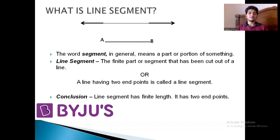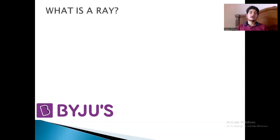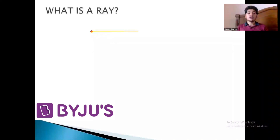Moving ahead, let us understand what is a ray in geometry. You must have heard about the word 'ray' in light rays or sun rays — have that understanding in mind and we will connect it with the geometrical interpretation. Suppose this is the sun — it is a point — and the sun throws rays. As you can notice, this ray can travel in the right direction as far as up to infinity.